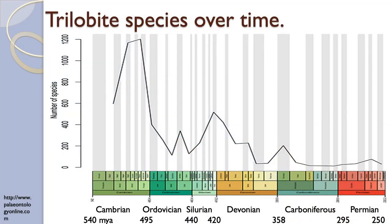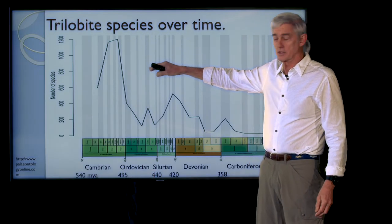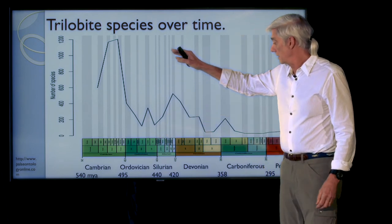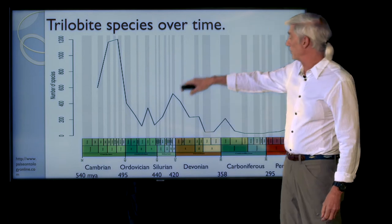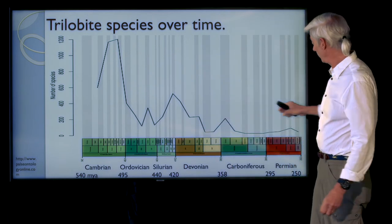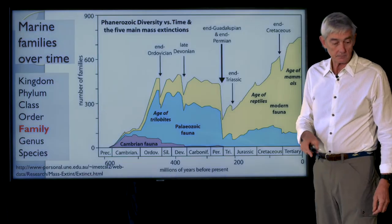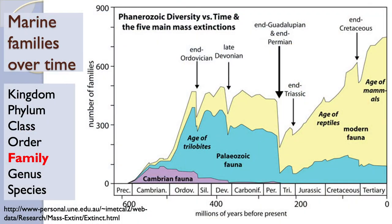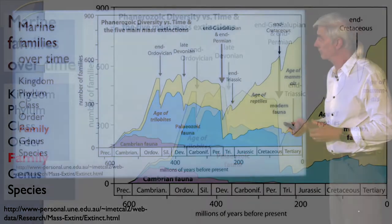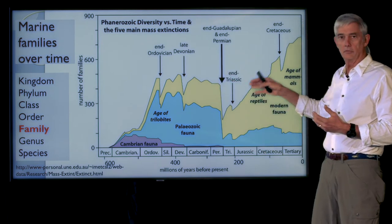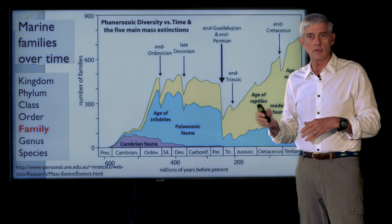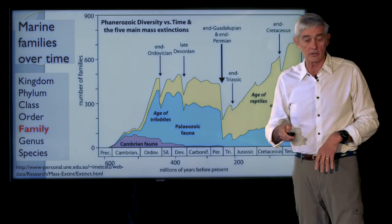Trilobites came and went over time. They diversified very quickly in the Cambrian and built up, then declined in the Ordovician, built up again, crashed in the Ordovician mass extinction, built up again, crashed again, built up again, and finally went extinct at the end of the Permian. So what we've been talking about are the dynamics of a couple of different lineages — the trilobites, the ammonoids, and the nautiloids — and their ebb and flow, their crashes and rises in the context of these mass extinctions. Now I want to go through these mass extinctions, talk about the dominant life in each one and the severity of those extinctions over time.